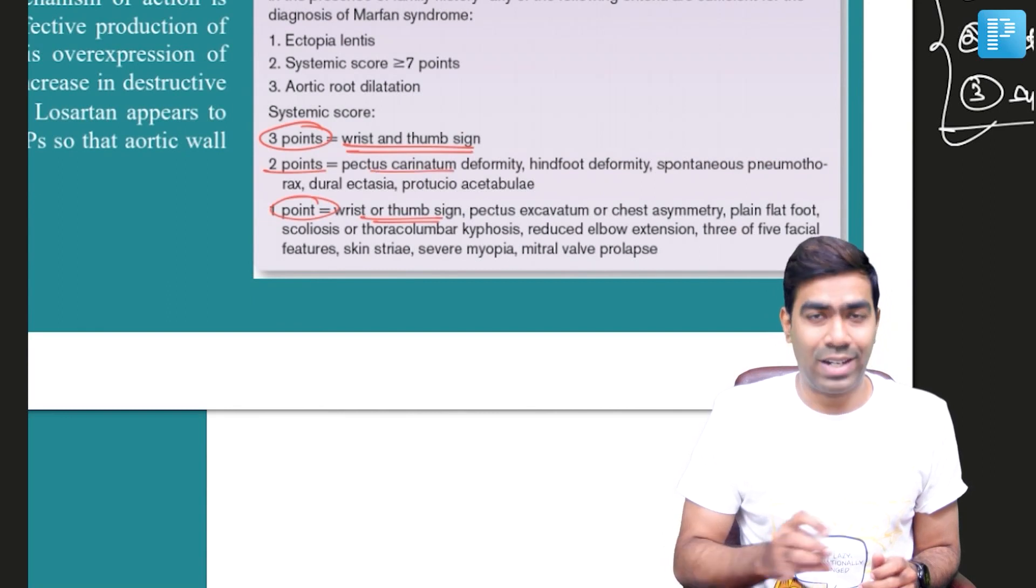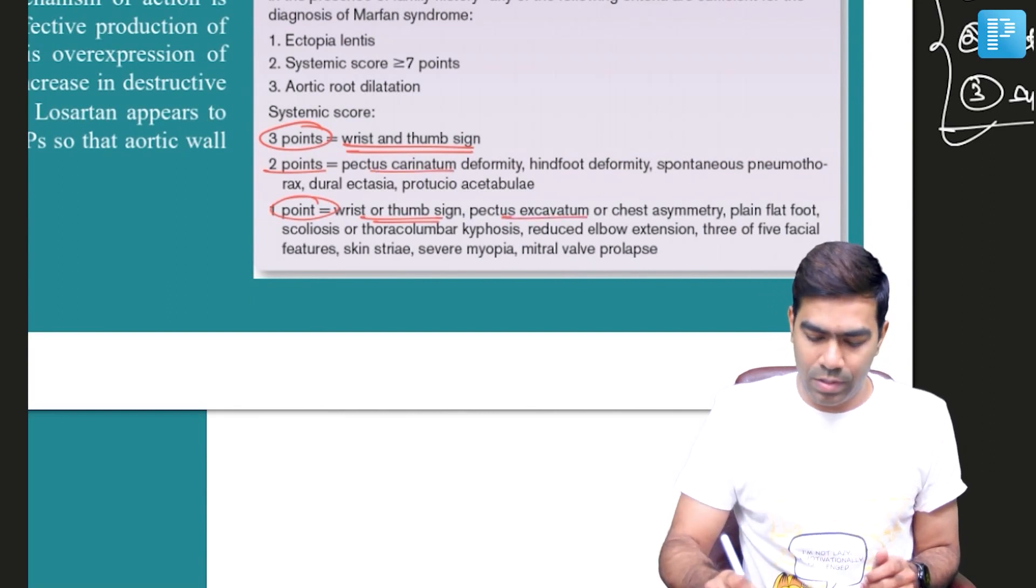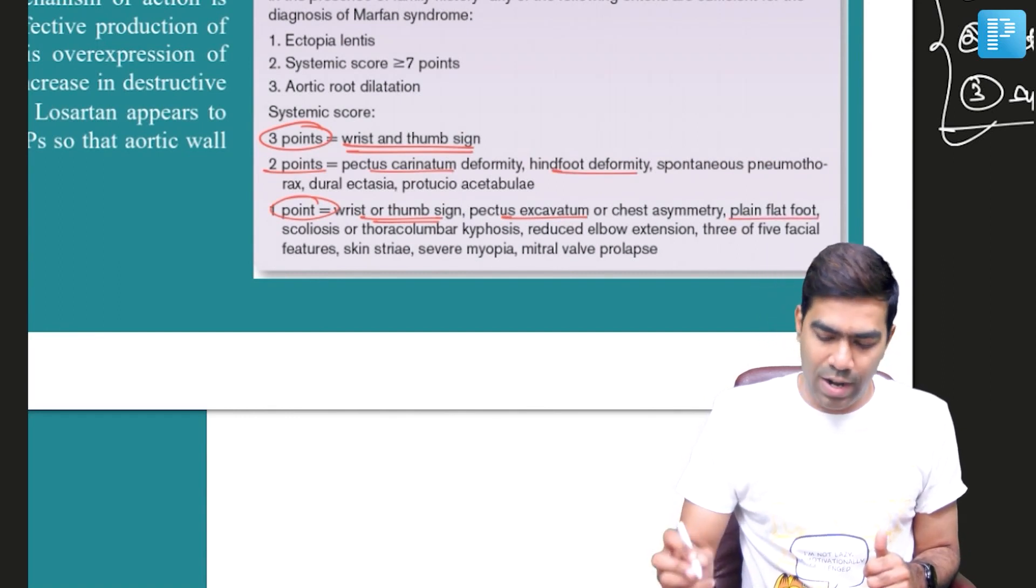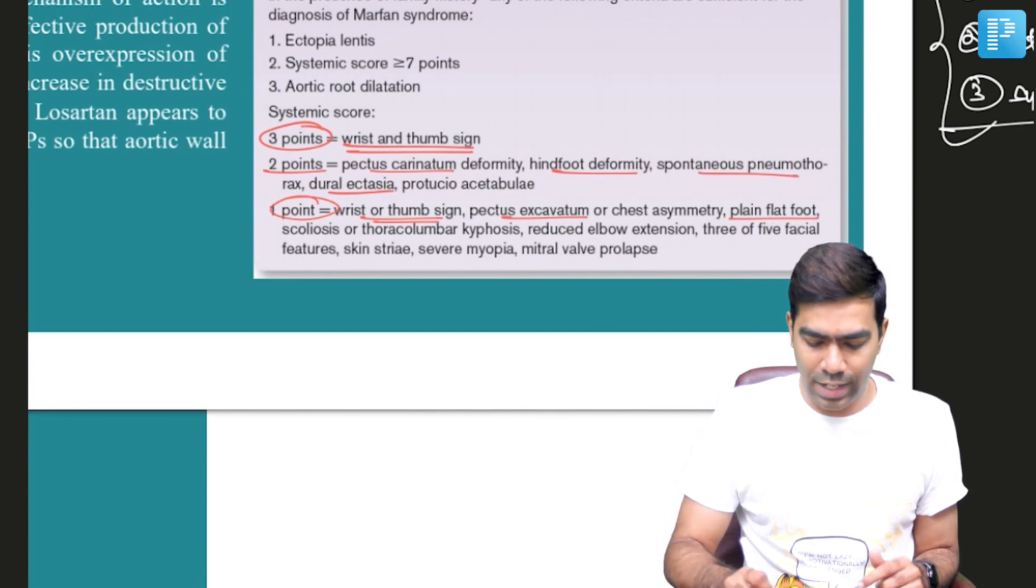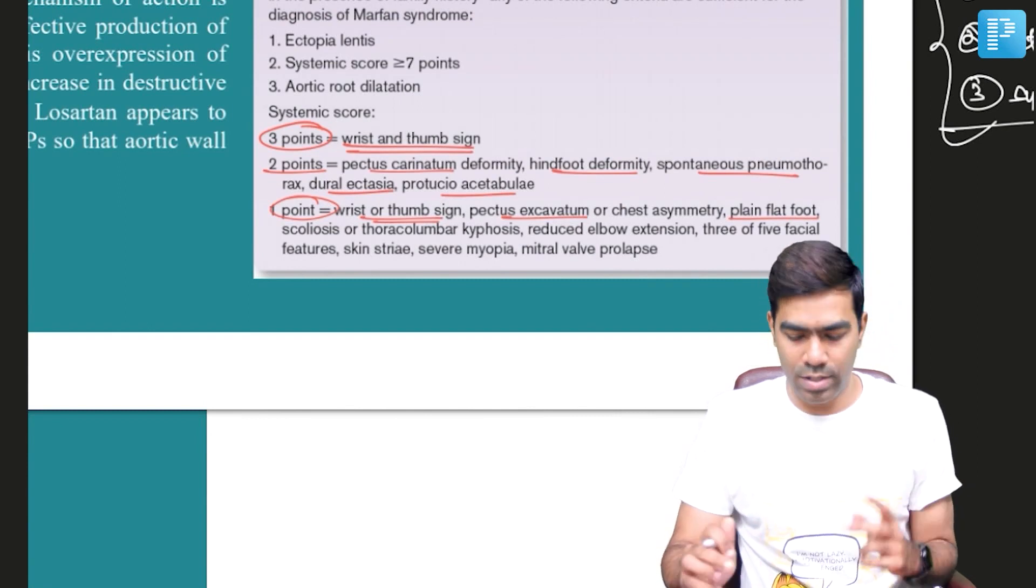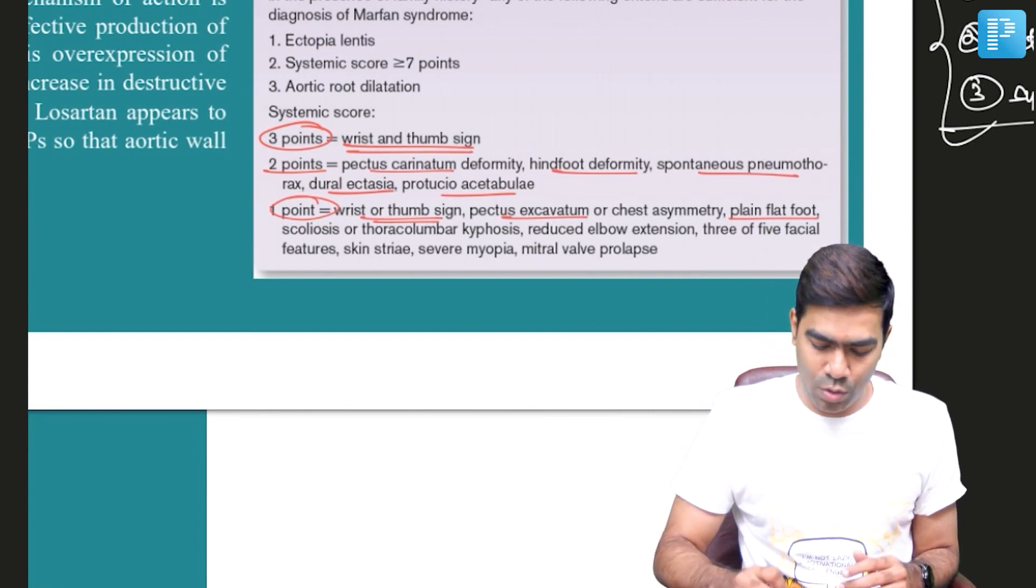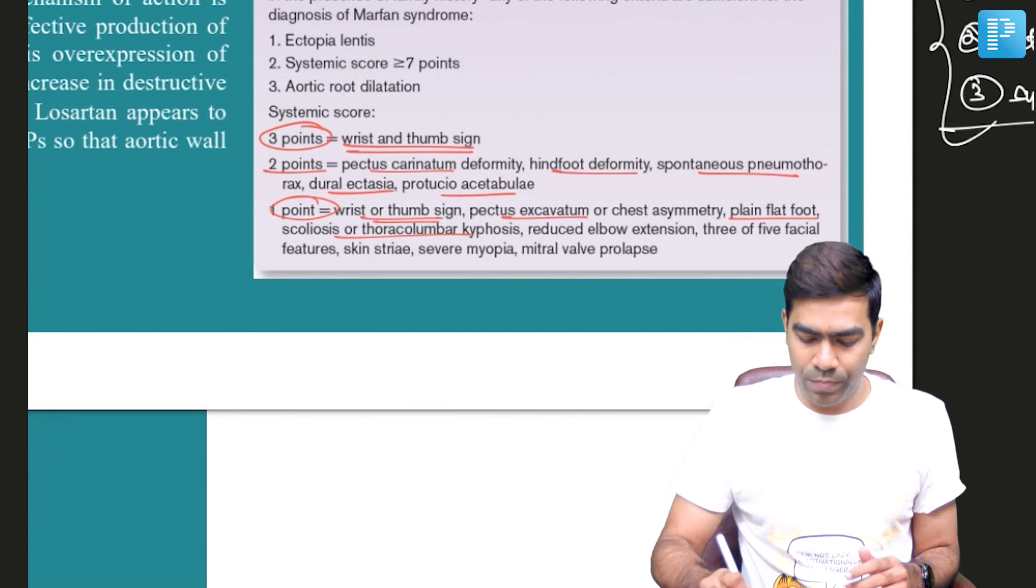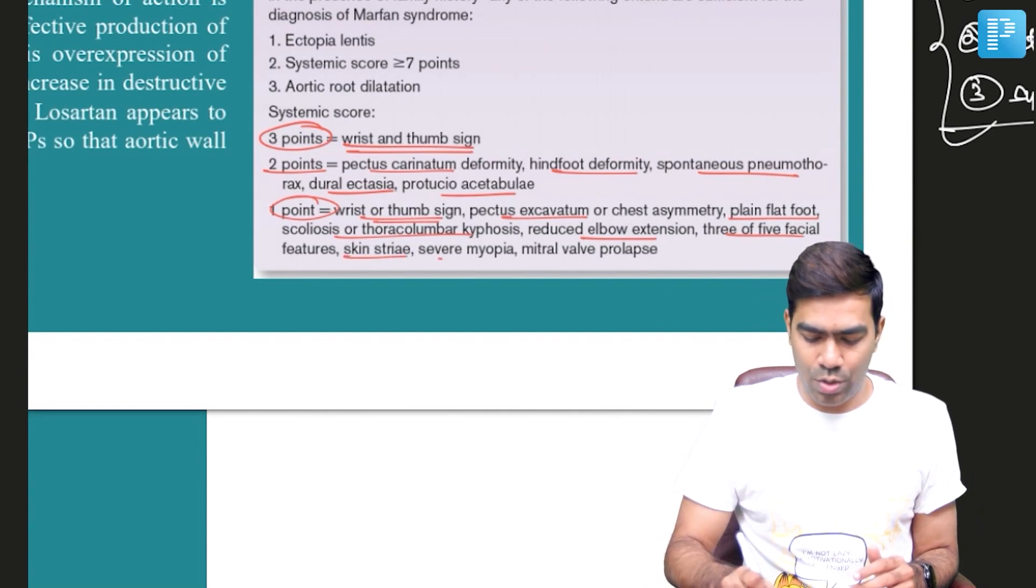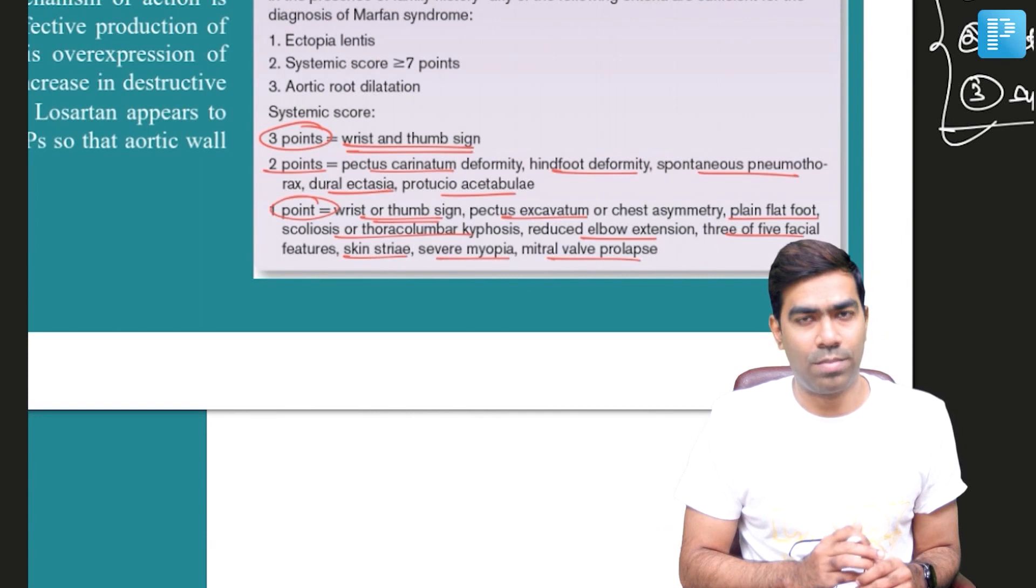Pectus carinatum: two points; pectus excavatum: one point. Hindfoot deformity: two points; flat foot: one point. Spontaneous pneumothorax, dural ectasia, and protrusio acetabuli carry two points. Scoliosis/kyphosis, reduced elbow extension, facial features like dolichocephaly, striae, severe myopia, and mitral valve prolapse each carry one point.